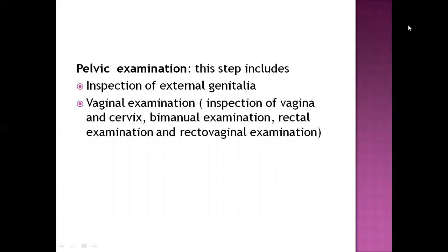On percussion, we can identify pelvic tumors or tumors elsewhere in the body by listening to the sound. On auscultation, we can detect hyperactive or hypoactive bowel sounds and identify intestinal obstruction. In pelvic examination, there is inspection of external genitalia from the outside and inspection of internal organs via manual or bimanual examination. Manual examination is digital examination using fingers, and bimanual examination uses both hands. Rectovaginal examination can also be performed to identify deformities in the rectum and vagina.